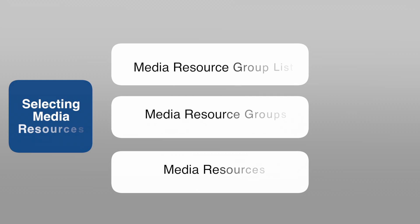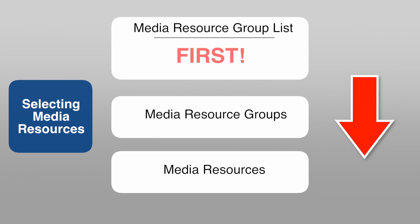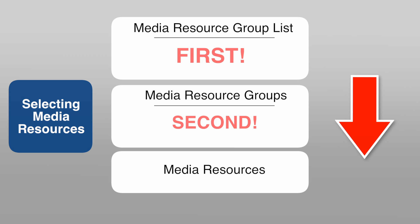It's important to understand the process CUCM goes through to decide which media resource to use. We have media resource group lists, media resource groups, and individual media resources — a conference bridge being one type. CUCM selects top-down: it looks at the media resource group list first, then the media resource groups, then chooses a media resource within that group.